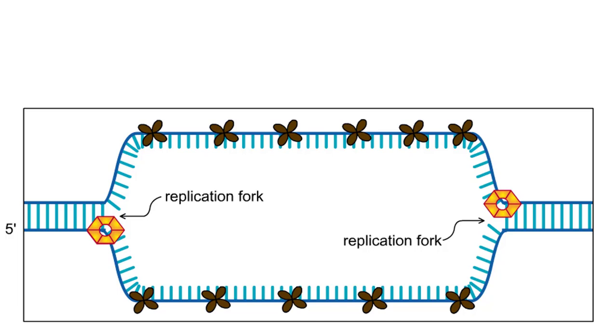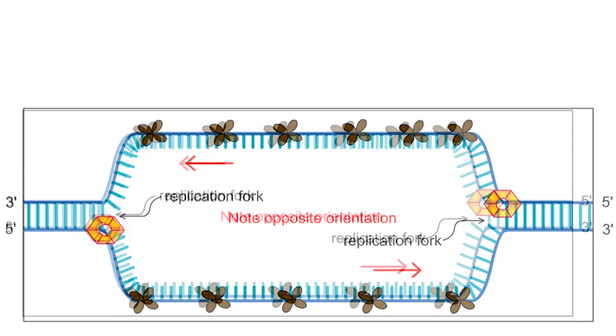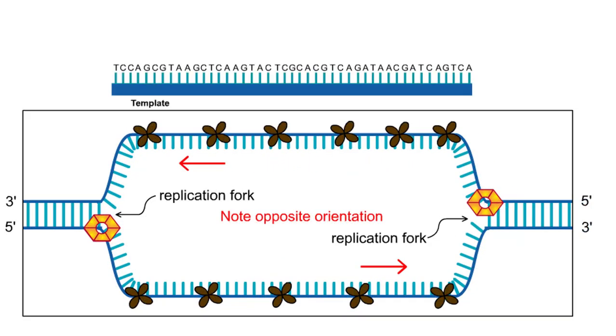Remember that the double helix consists of two anti-parallel DNA strands with complementary 5' to 3' strands running in opposite directions. Polymerase enzymes can synthesize nucleic acid strands only in the 5' to 3' direction.